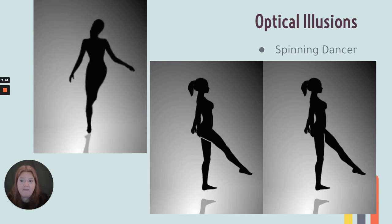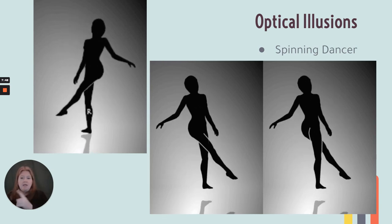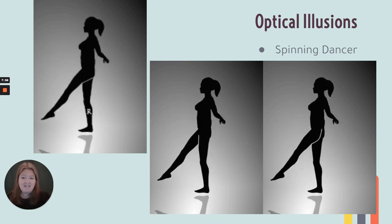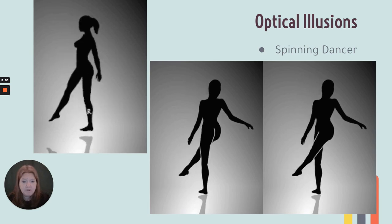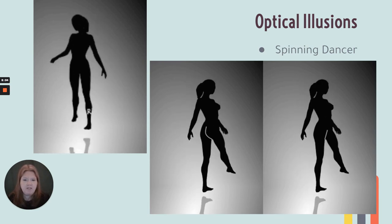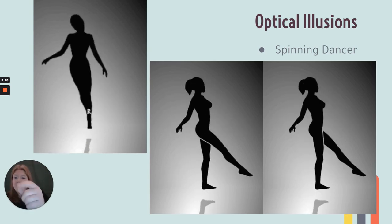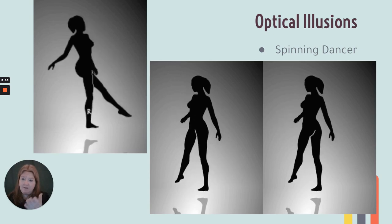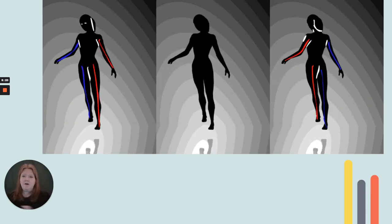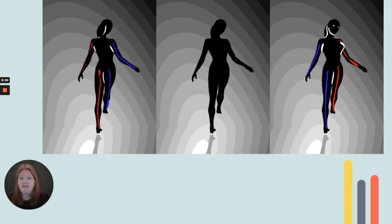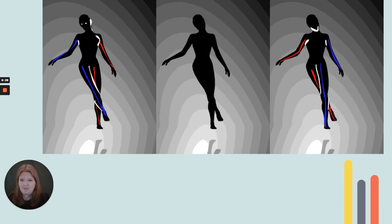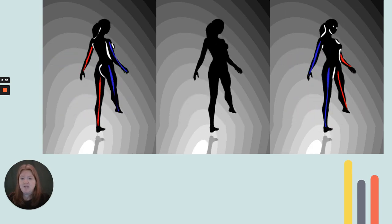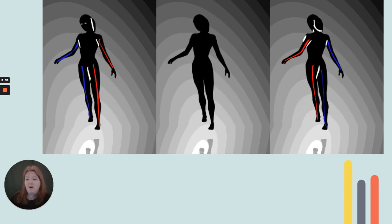The spinning dancer — she can either turn clockwise or counterclockwise. I've always only been able to see her going clockwise until I found a slow version. With the slow version, I was able to stare at her feet and make her switch and go in the opposite direction. Sometimes I have to blink and look away and look back to make her flip. Highlighting the arms and legs allows you to gain some perspective, and you can have the dancer flip and go in the opposite direction based on where your perspective of her silhouette is.